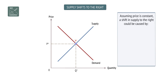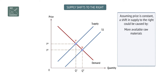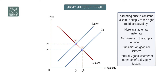A shift to the right is an increase in supply. Assuming price is constant, a shift in supply to the right could be caused by more available raw materials, an increase in the supply of labor, subsidies on goods or services, a reduction in taxes, or unusually good weather or other beneficial supply factors.